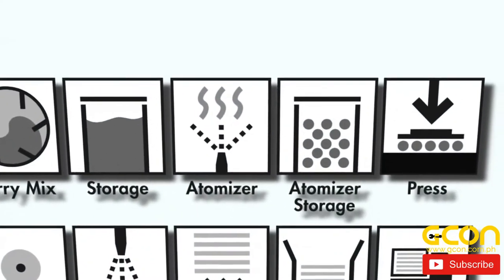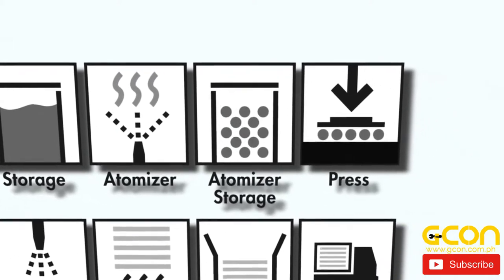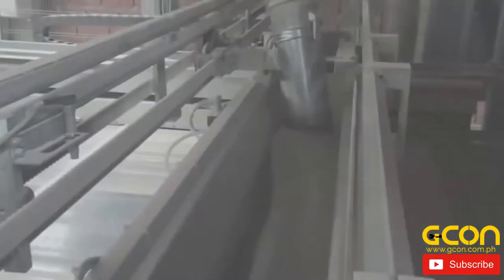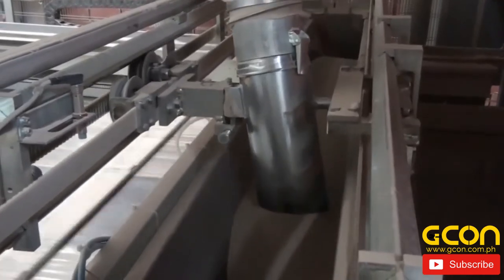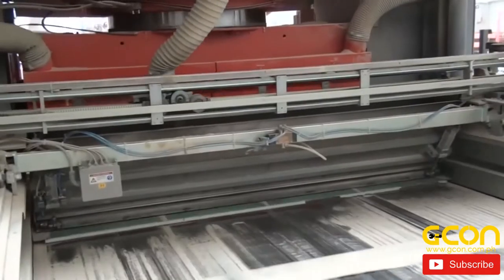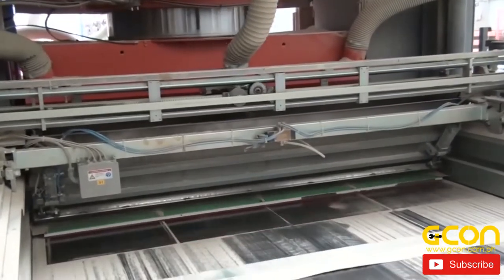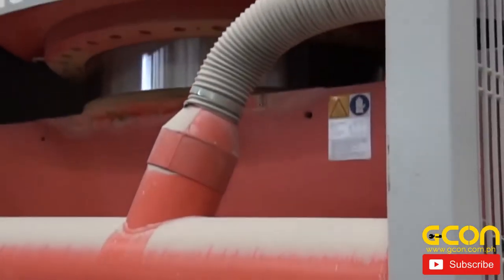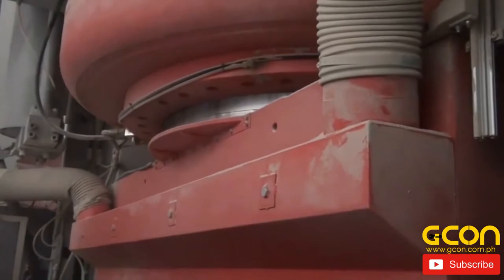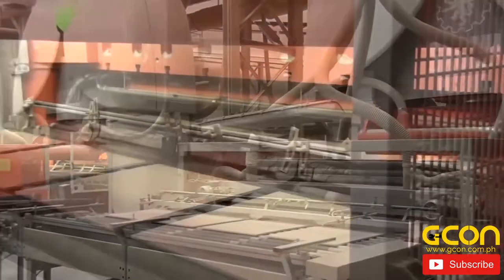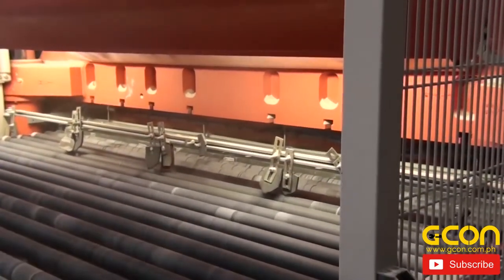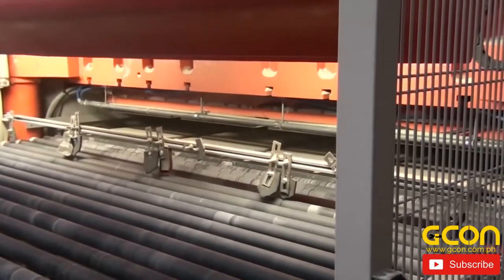The atomized powder is fed into a holding vat just behind the press. The vat releases measured quantities of atomized powder into a tray, which distributes the powder evenly into the mold. A force of 340 to 400 kilograms per square centimeter is applied using a large hydraulic press. The combination of high pressure and residual moisture turns the powder into a solid mass.